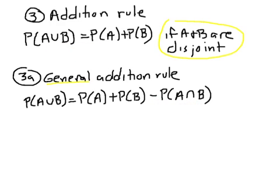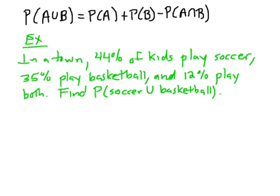A good way to think about this is with an example involving a Venn diagram. Here's the general addition rule written up top, and here's a silly example: in a town, 44% of kids play soccer, 35% play basketball, and 12% play both. We're going to find the probability of soccer or basketball. We have to use the general rule because soccer and basketball are not disjoint — 12% of kids play both, so they can happen at the same time.